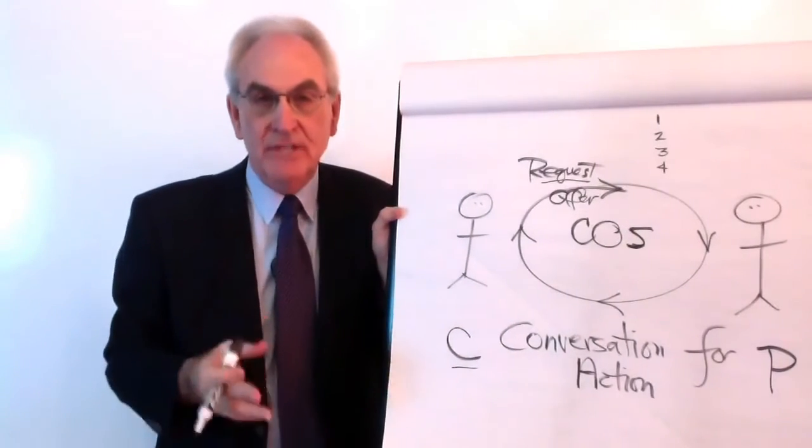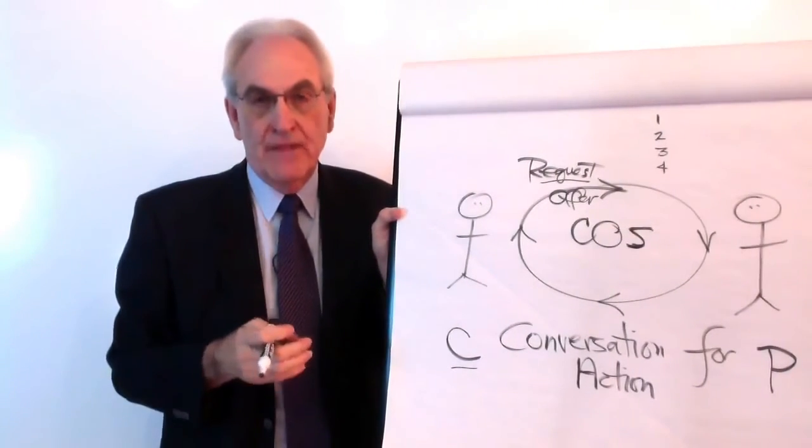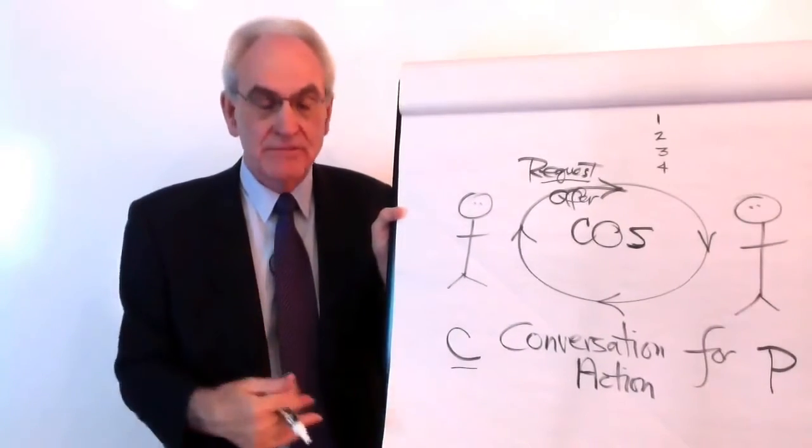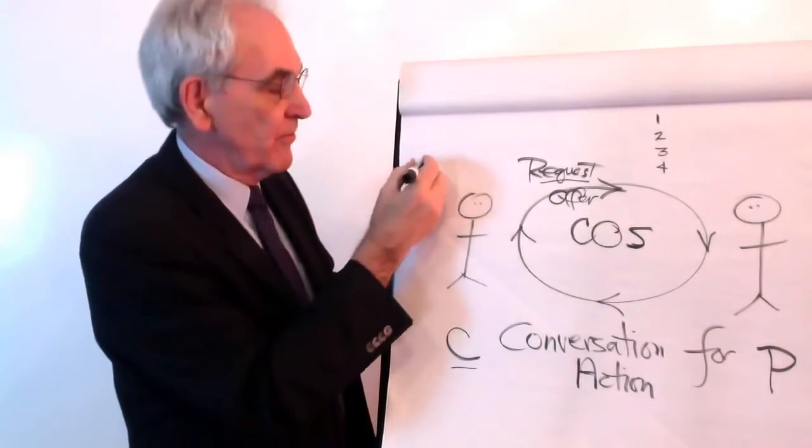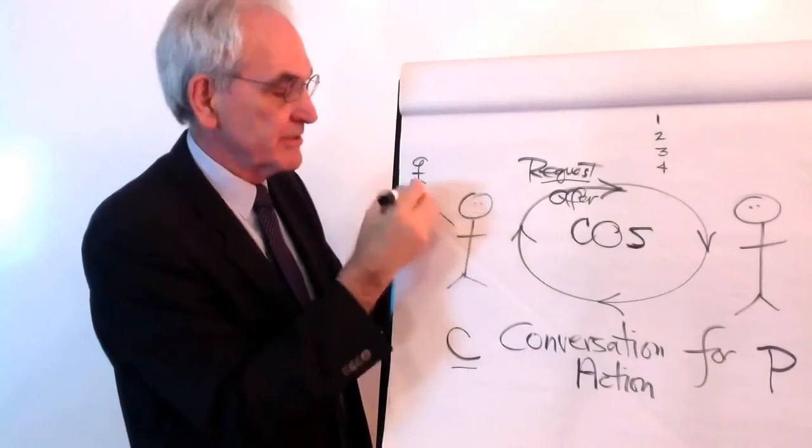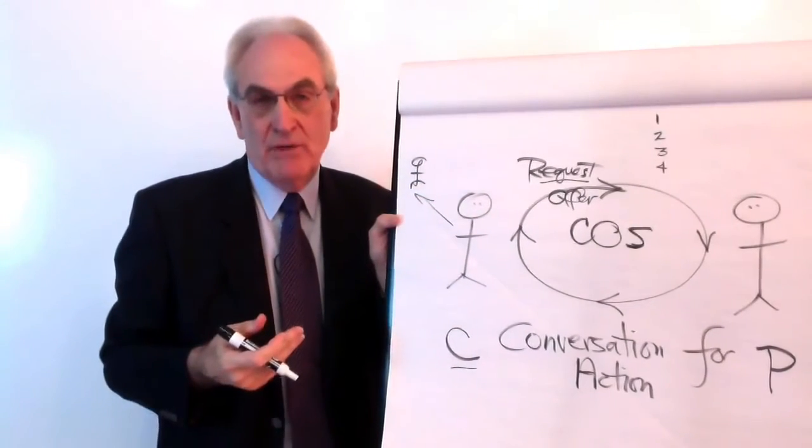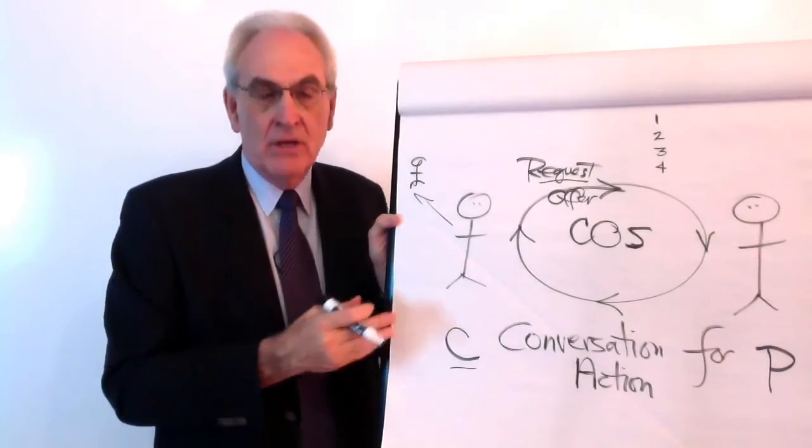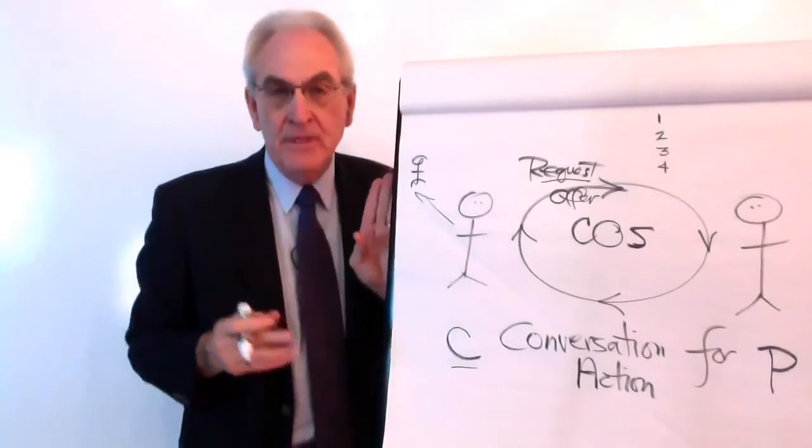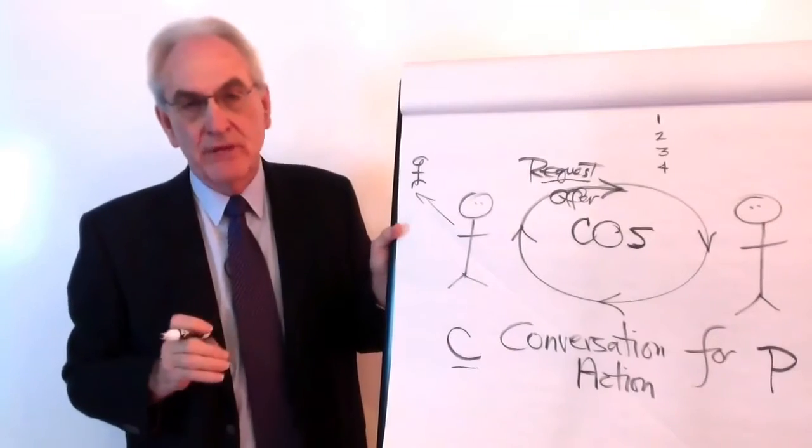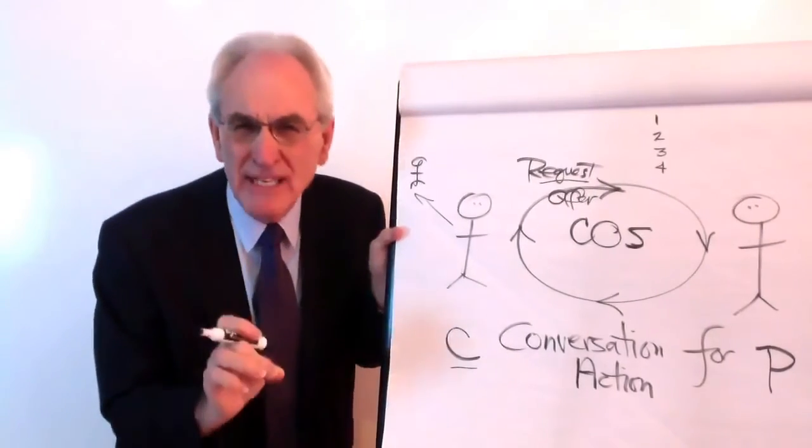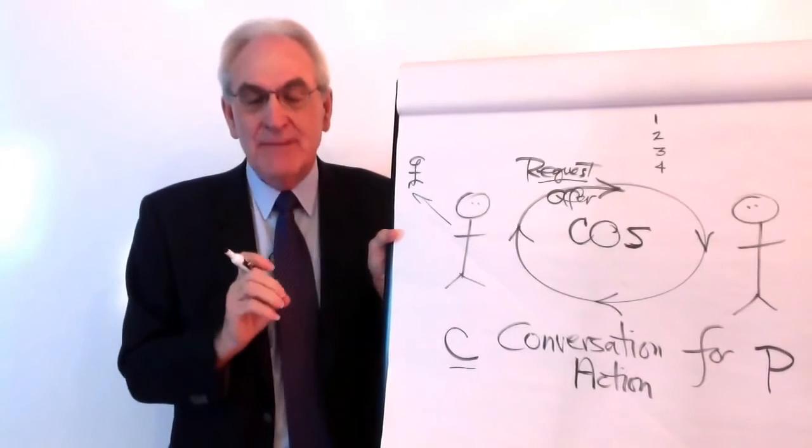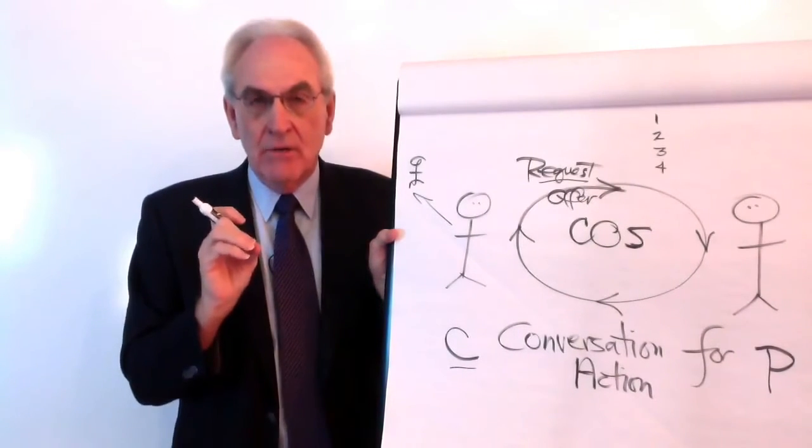And they're asking for something that we call a condition of satisfaction. They're not asking just for something to be done. They're asking for it to be done in a way that produces satisfaction for themselves or for their customers. It is often why we make requests, to satisfy other people. And so, after the request is made, the point here is we have to come to agreement. We have to understand, we have to coordinate, what is the future that we share? Are we on the same page? Are we clear?